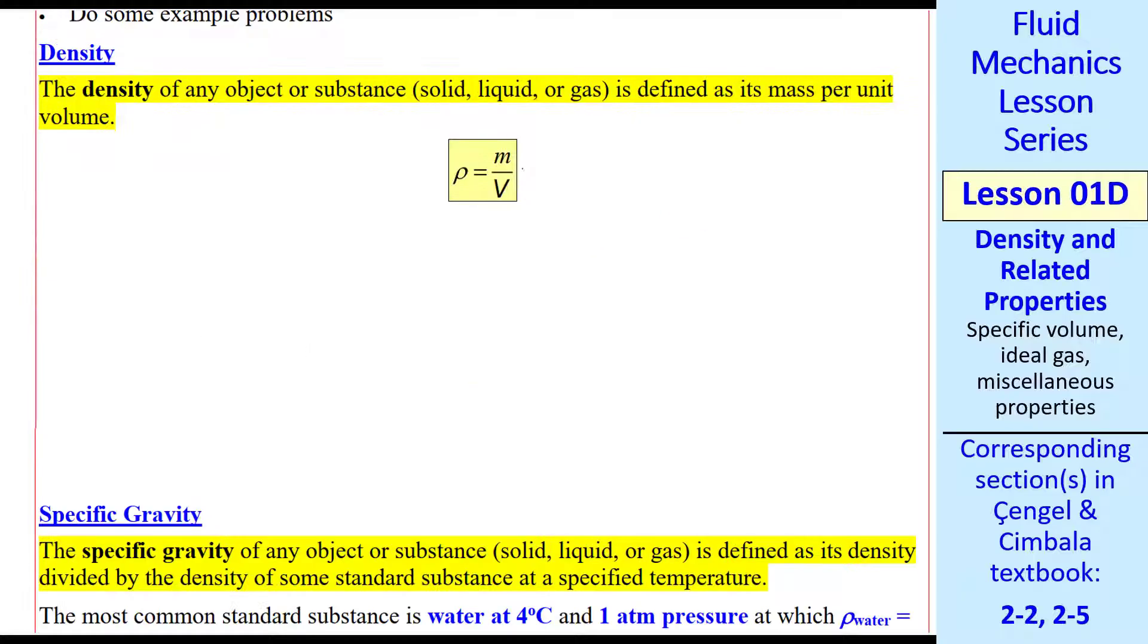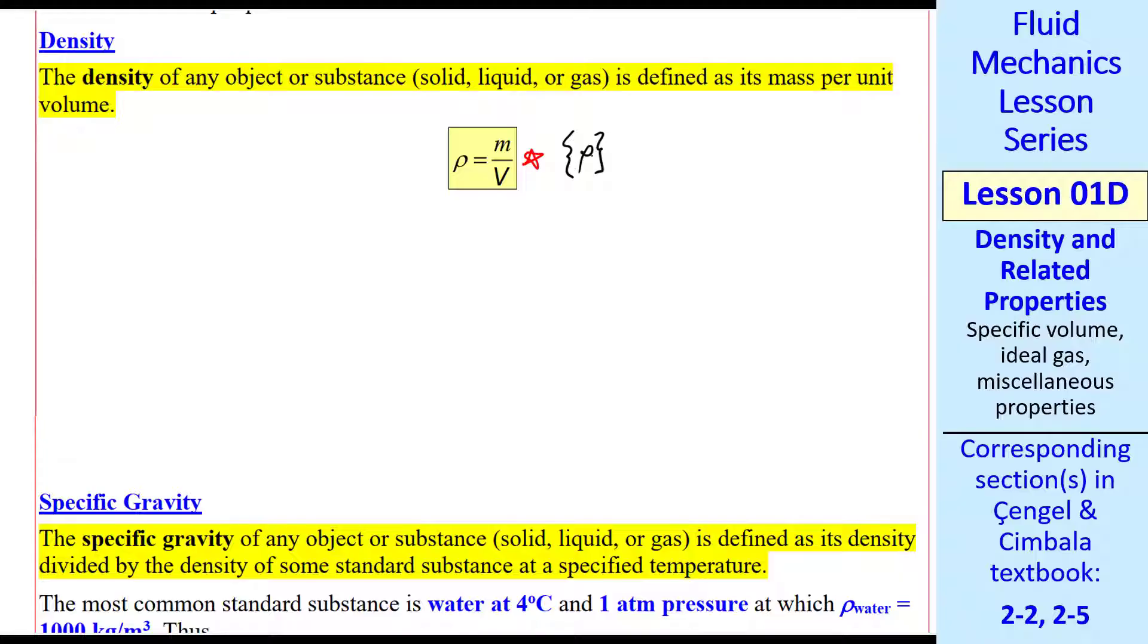What is density? Density is simply mass divided by volume. In my notation, curly brackets around a variable means the dimensions of. So the dimensions of density are mass per volume, M over L cubed. Square brackets around a variable indicate the units. Typical units of density are kilogram per meter cubed.